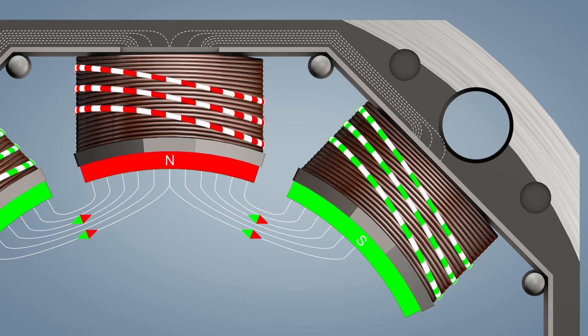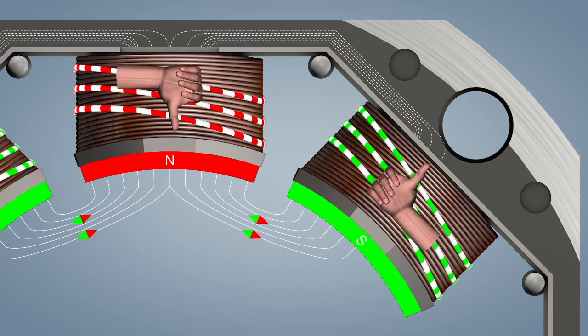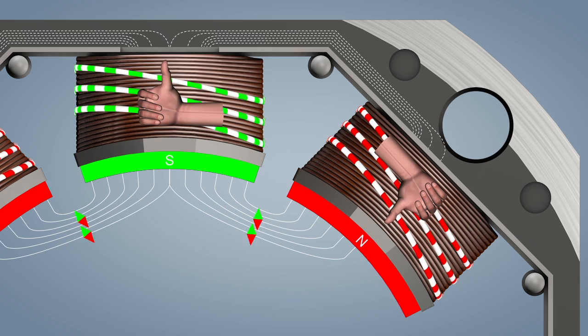When current flows, the windings generate a magnetic field with a strong north and south pole which is determined by the right-hand rule. If the direction of the current in the winding changes, the polarity of the electromagnets is reversed.